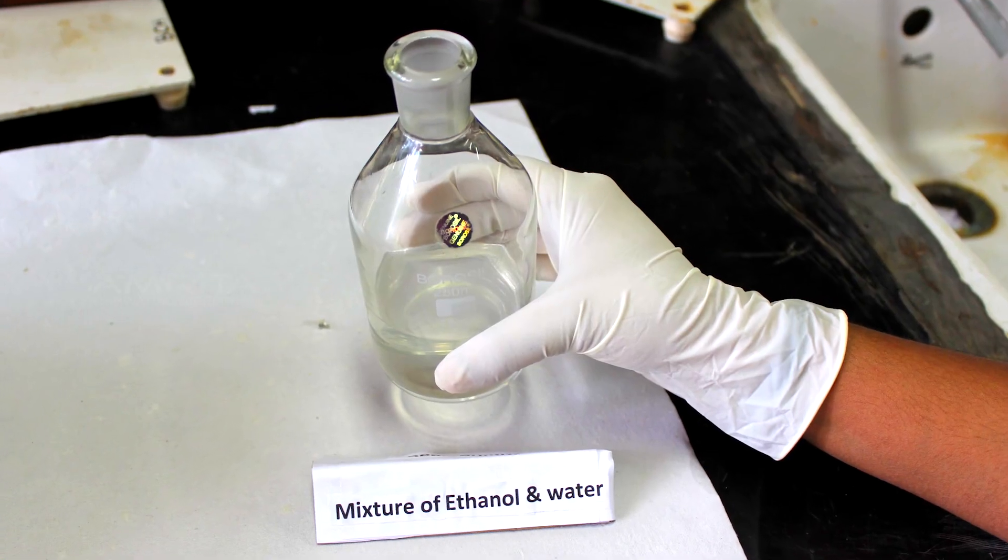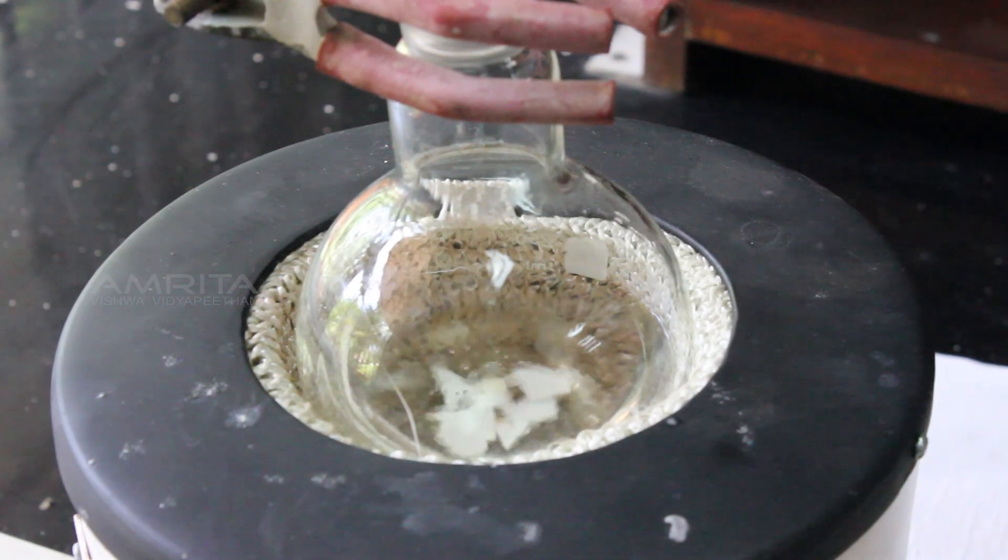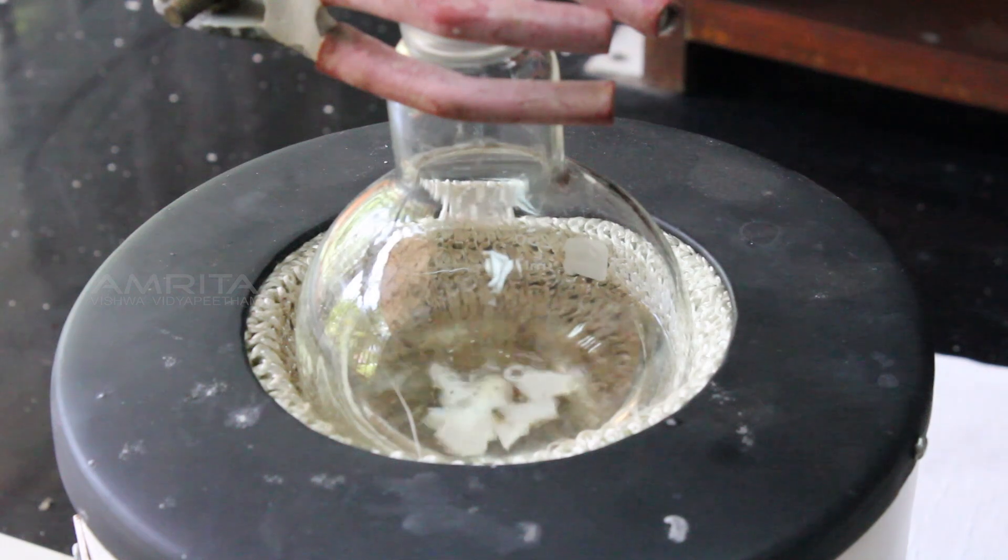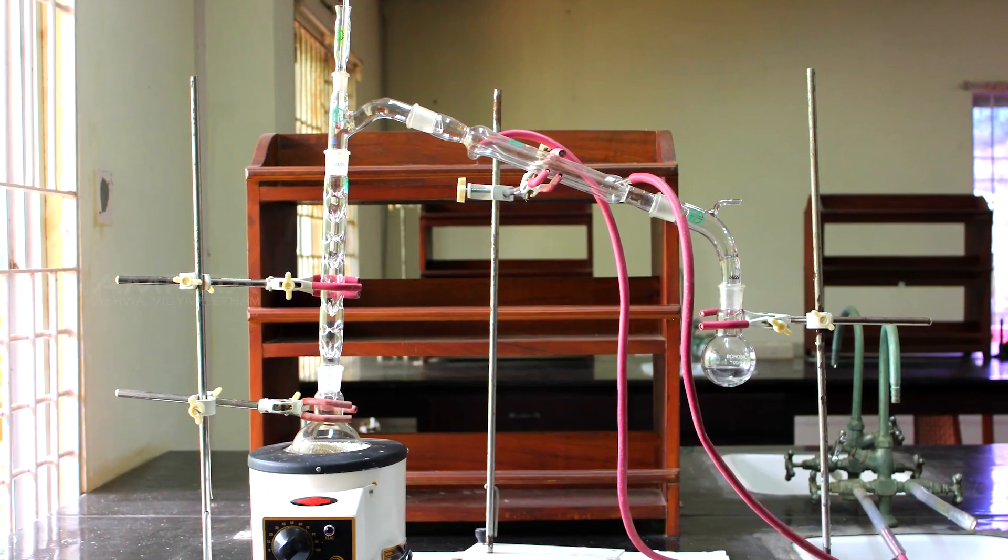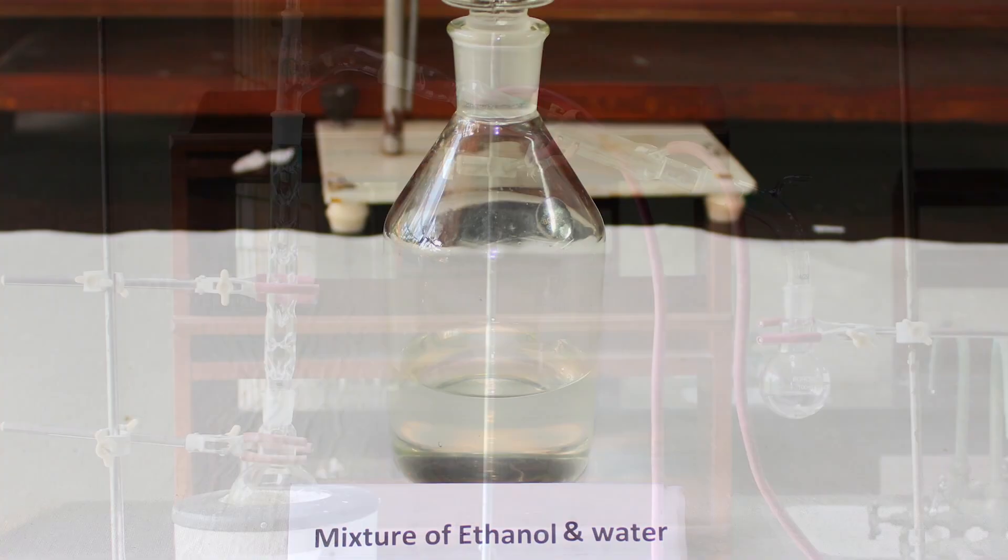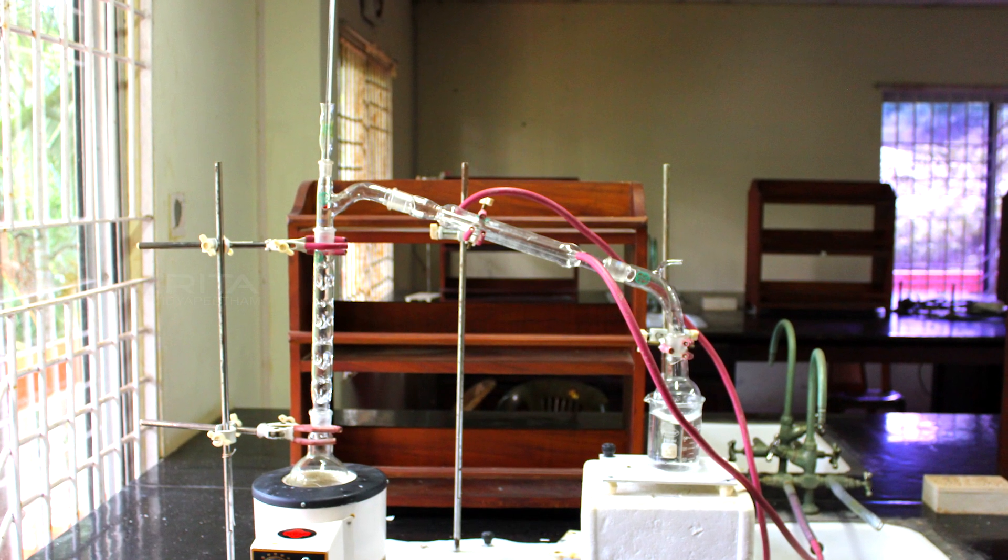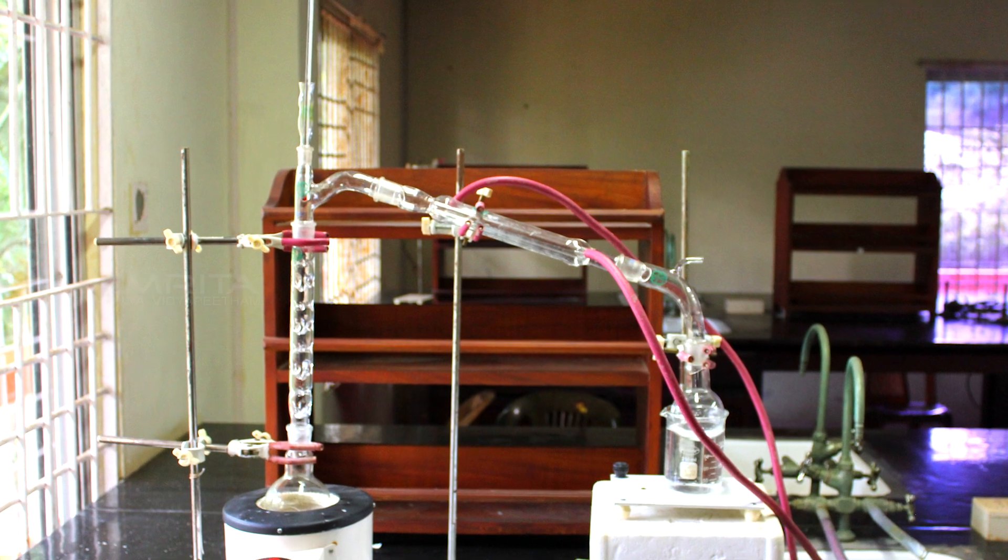Therefore, the separation of two or more miscible liquids for which the difference in boiling point is less than 25K can be done only by fractional distillation. Since ethanol in water forms an azeotrope, the distillation has to be repeated to obtain the pure components.